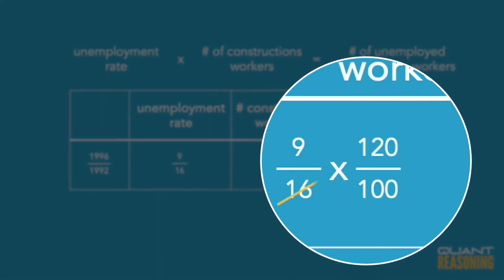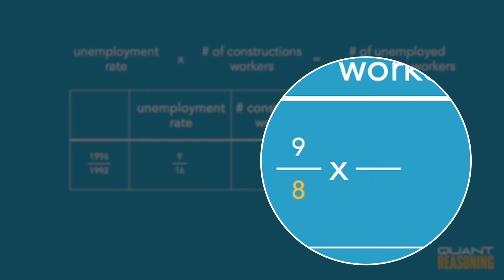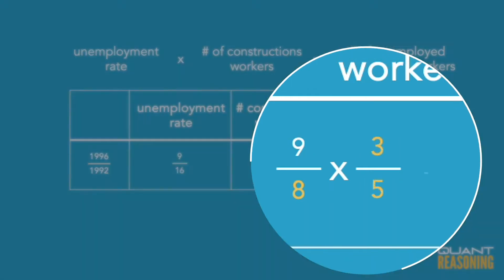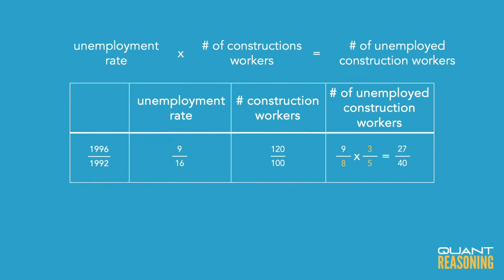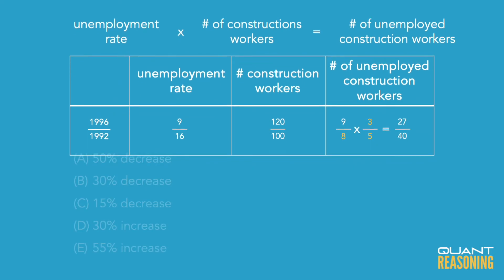Before we multiply the two fractions to get the ratio for the actual number of unemployed construction workers, let's reduce any common factors we can find. We end up with 9 eighths times 3 fifths, and that gives us 27 over 40.